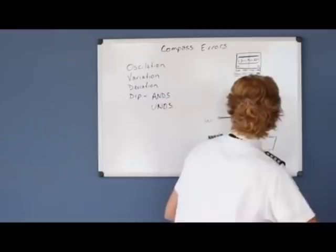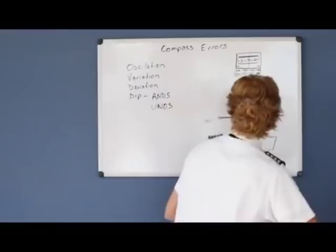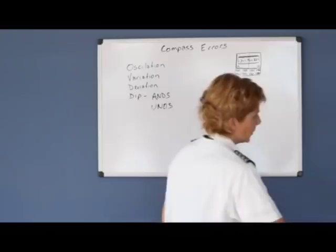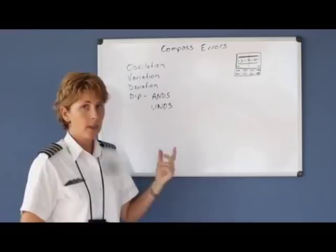So ANDS is accelerate north, decelerate south. Now the UNOS is a little bit tricky. What it stands for is undershoot north, overshoot south, and that has to do with what heading we roll out on.